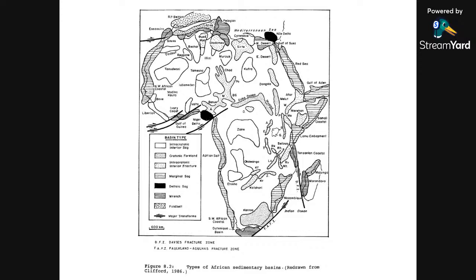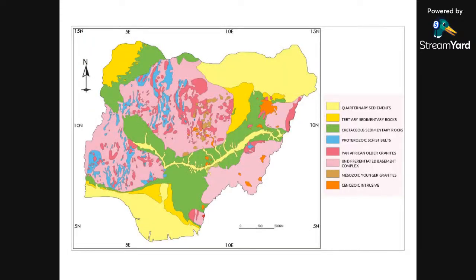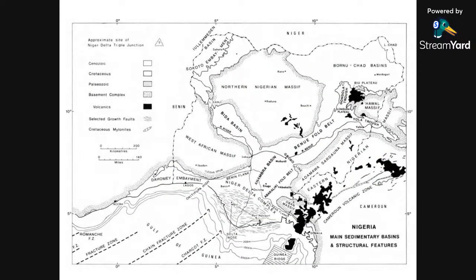This map shows the different types of basins. The sedimentary basins of Nigeria are Mesozoic to Cenozoic in age and form a relatively thin veneer of sediment on top of the Pan-African basement, covering a third of Nigeria. From another map showing the different basins, we can see from north to south: the Borno-Chad Basin, the Benue Fold Belt, the Anambra Basin, the Niger Delta, and the Sokoto Basin (or Iullemmeden Basin).